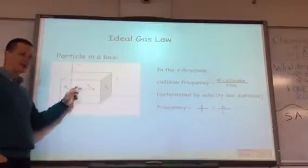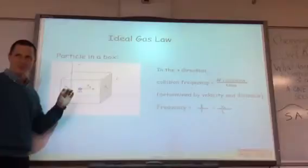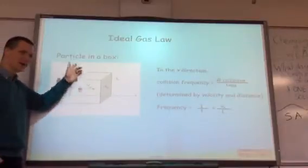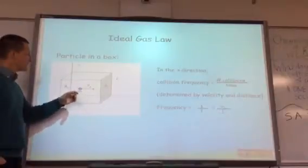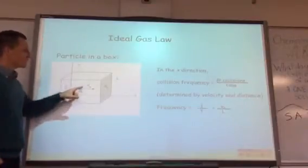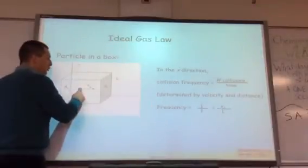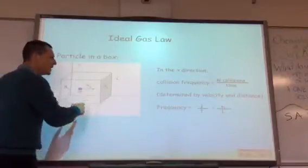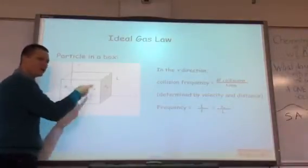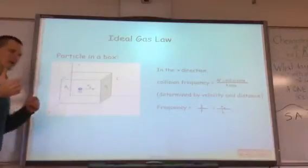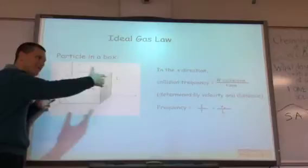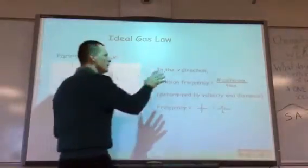Starting very simple: we have a single particle inside of a box. The particle only has one-dimensional motion to get us started, meaning it's going left and right — back and forth. It's not going up and down, which would be two-dimensional, and not in and out either. The frequency with which this particle hits the walls of the container is directly related to how fast it's moving — faster means higher frequency — and inversely related to the size of the box. A bigger box means it hits the walls less frequently because it has farther to travel.